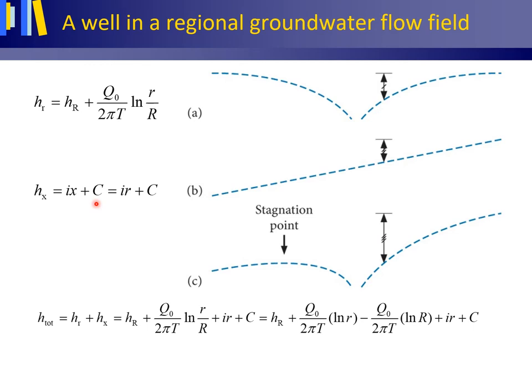Thus, for both confined and unconfined conditions this equation holds. H(x) is the hydraulic head of the original regional groundwater flow field in meters. Taking x = 0 and r = 0 at the same location, x and r in these equations are interchangeable. Figure C shows the drawdown curve of a pumping well in a regional groundwater flow field. Note that the volume fluxes of the pumping well in figures A and C are taken equal. The influence of the regional groundwater flow field in figure C is to lower the hydraulic head of the pumping well drawdown curve in the direction of the original regional groundwater flow.